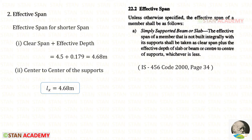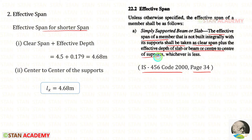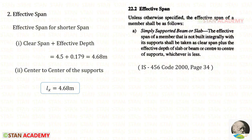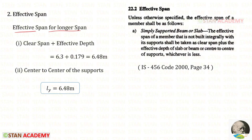Now let us find the effective spans. From IS 456:2000 page 34, the effective span shall be taken as clear span plus effective depth of the slab, or center-to-center of supports, whichever is less. Since no support width is mentioned, we use: effective Lx = 4.5 + 0.179 = 4.68 m, and effective Ly = 6.3 + 0.179 = 6.48 m.